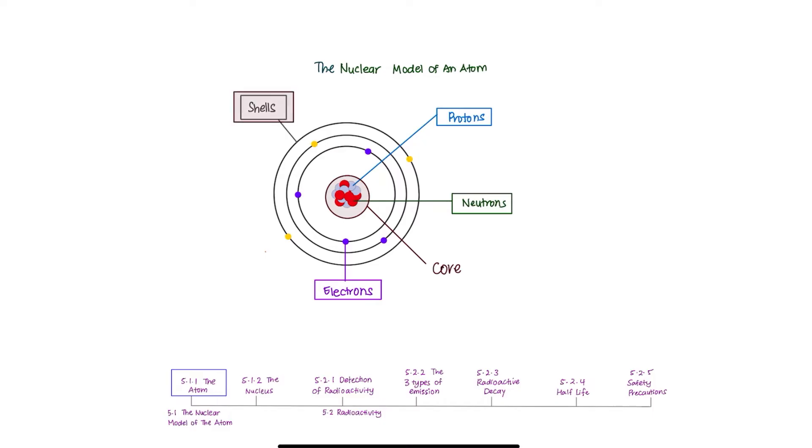And you have electrons orbiting on the shell around the nucleus. Protons have a relative charge of plus 1, electrons have a relative charge of negative 1 and neutrons are neutral, meaning they have no charges. So, you can write them as 0.